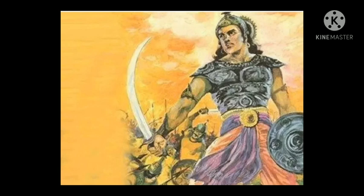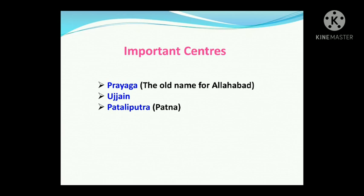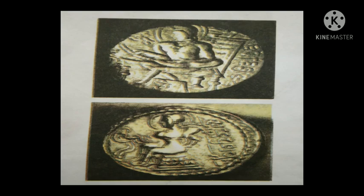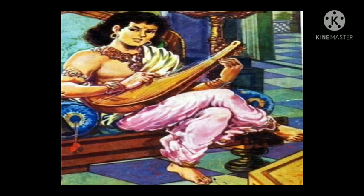Let's talk about some important centers of the Gupta rulers. The important centers were Prayaga, Ujjain, and Pataliputra. Prayaga was the old name for present-day Allahabad, and Pataliputra is present-day Patna. At the same time, some other qualities of Samudragupta are shown on coins — for example, the coin where he is shown playing the Veena. He was a poet and a musician also. So these are the various qualities of Samudragupta.